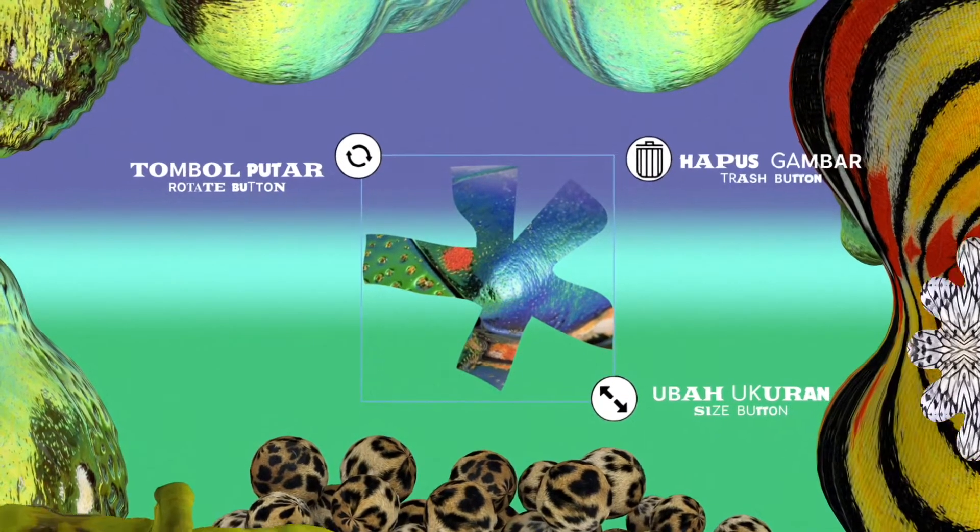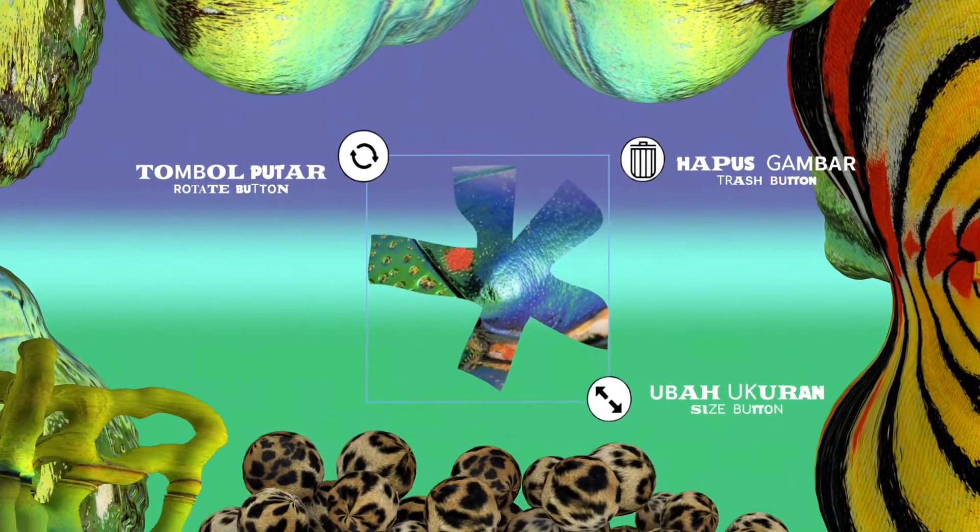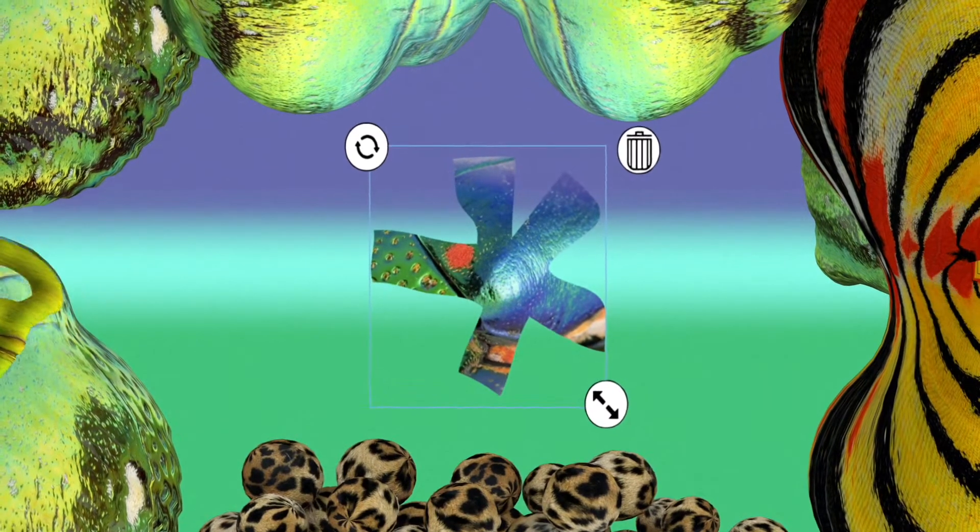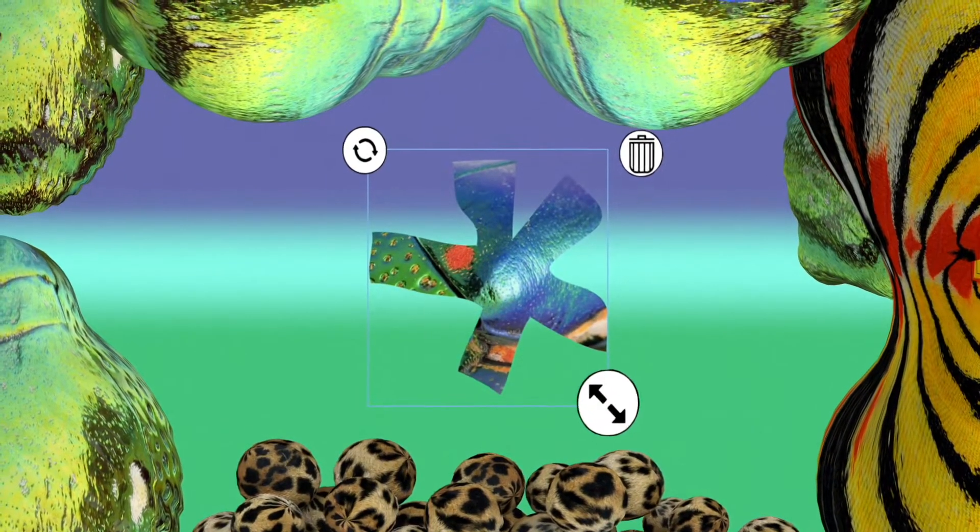Then, after you choose the shape, you can make it bigger or smaller by moving the arrow icon. You can change the shapes too. It is up to you.